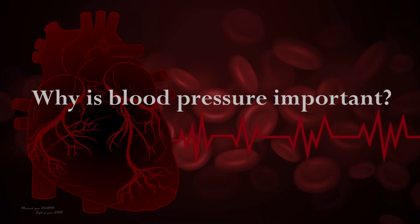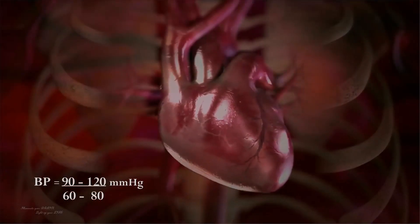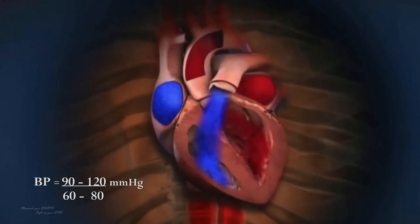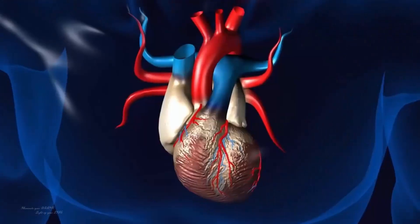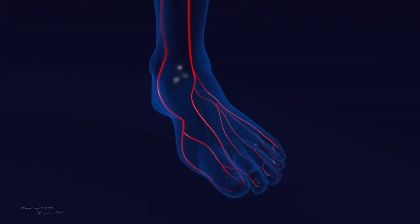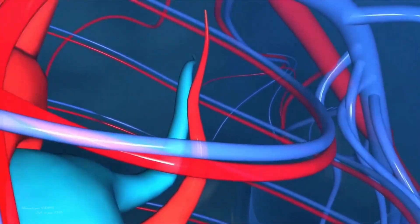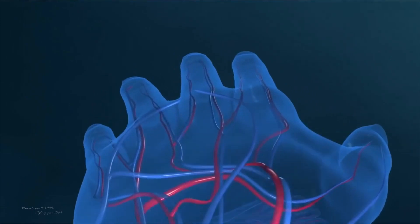When blood pressure is within a normal range, it means the heart is able to pump blood efficiently and the blood vessels are able to transport blood throughout the body without undue stress or strain. This helps to maintain adequate blood flow to all the organs and tissues in the body, which is essential for their proper functioning.